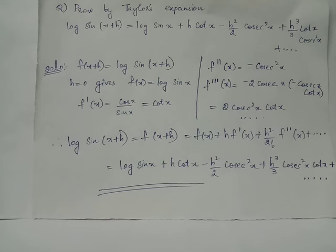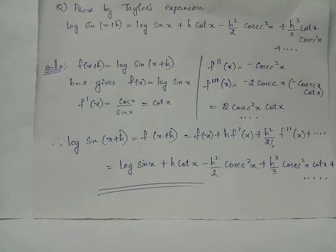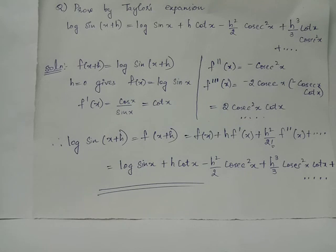The 2 in the numerator and the 2 in the 3 factorial will get cancelled, so 3 factorial in the denominator becomes 3 after cancellation. Therefore we obtain the term h cubed upon 3 cosec squared x cot x plus etc. Thus we have obtained the desired expansion for the function log sin(x + h) using the Taylor series.